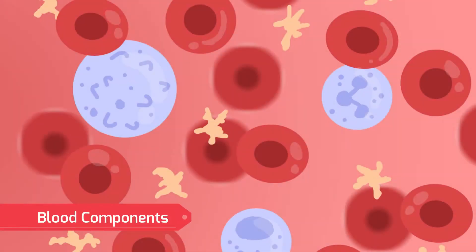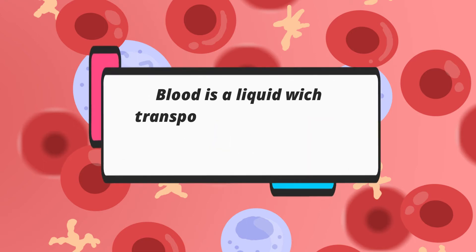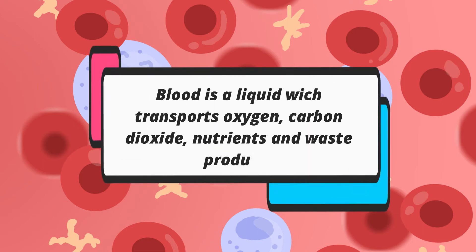Hi guys, this is Jedard from the channel Drawings and Science, and today we will learn about blood components. Blood is a liquid or fluid which transports oxygen and nutrients to cells and carries away carbon dioxide and other waste products.